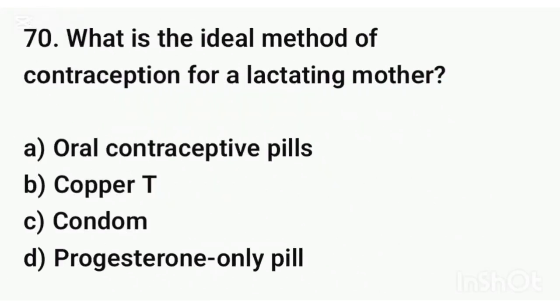Question number seventy. What is the ideal method of contraception for a lactating mother? The correct answer is option D: Progesterone-only pill.